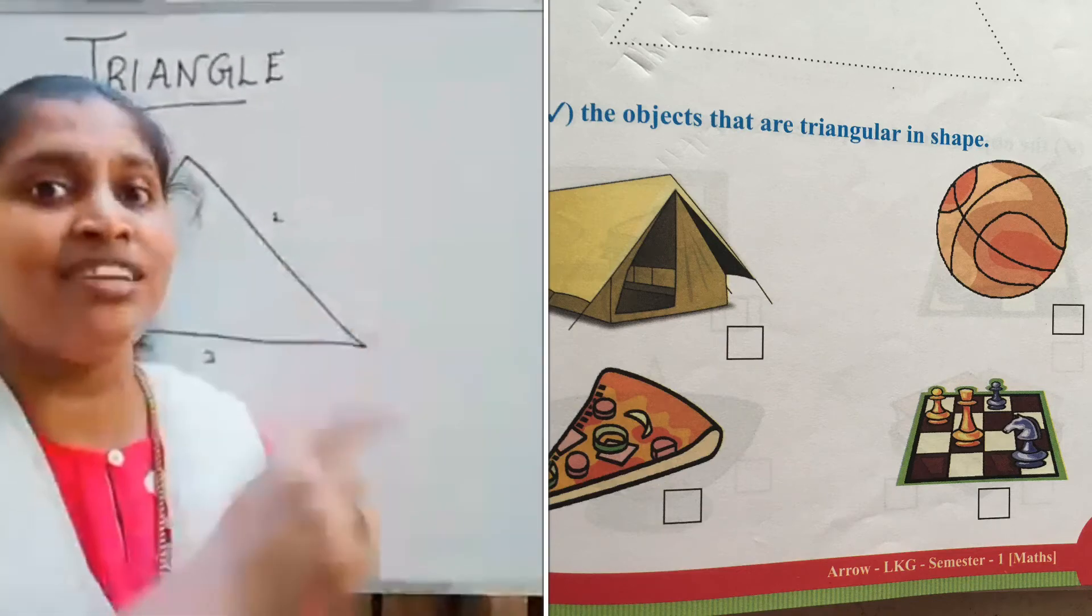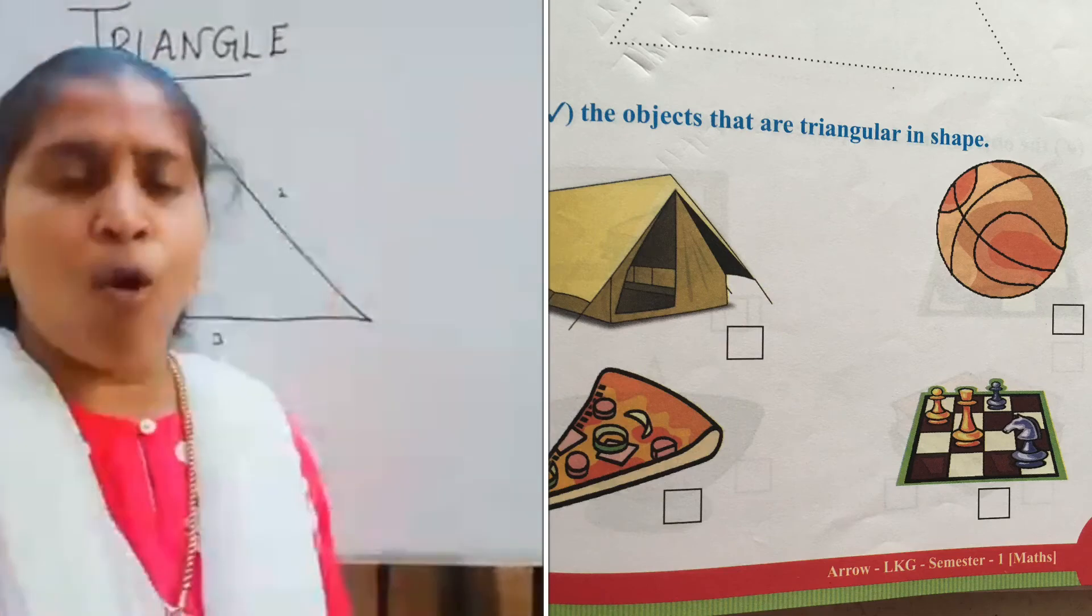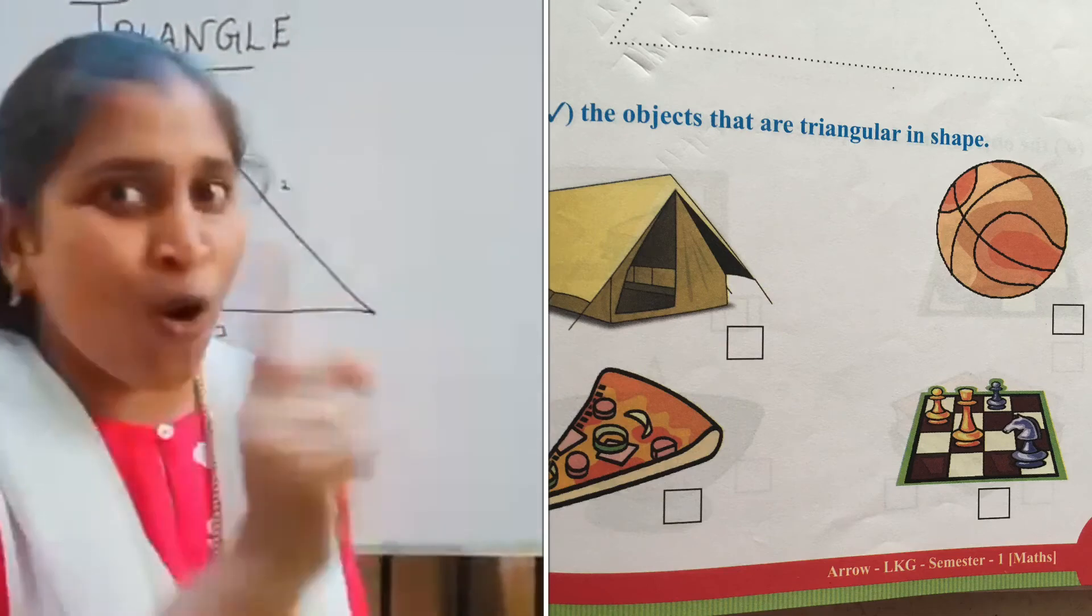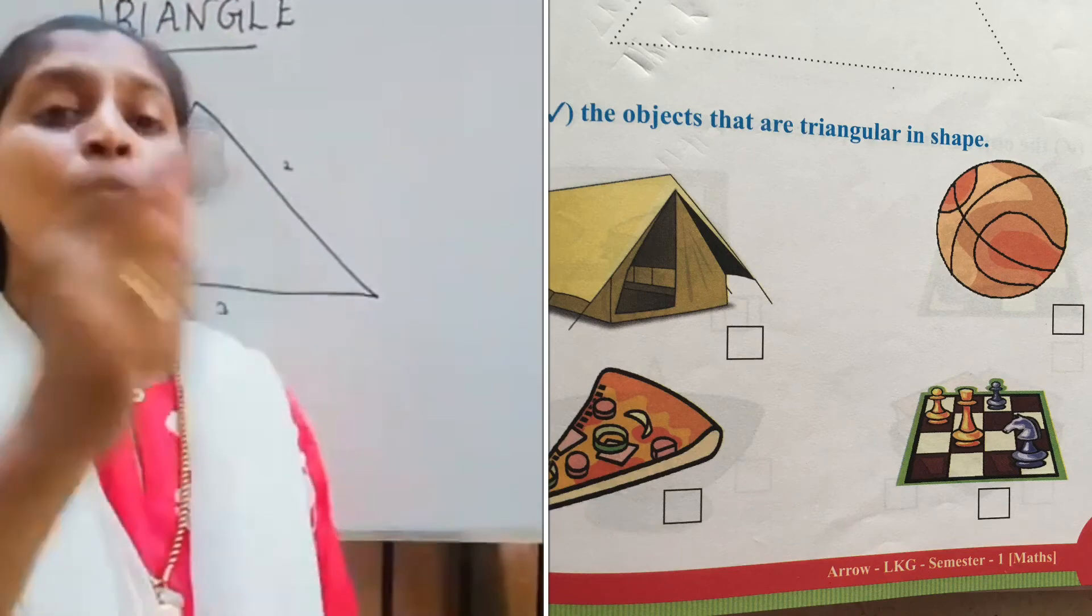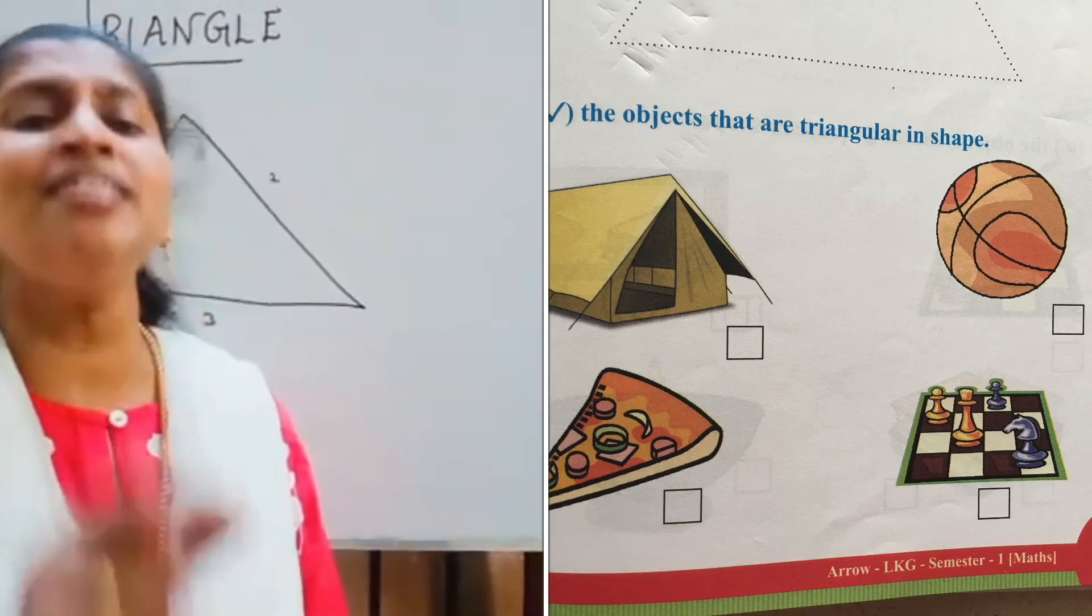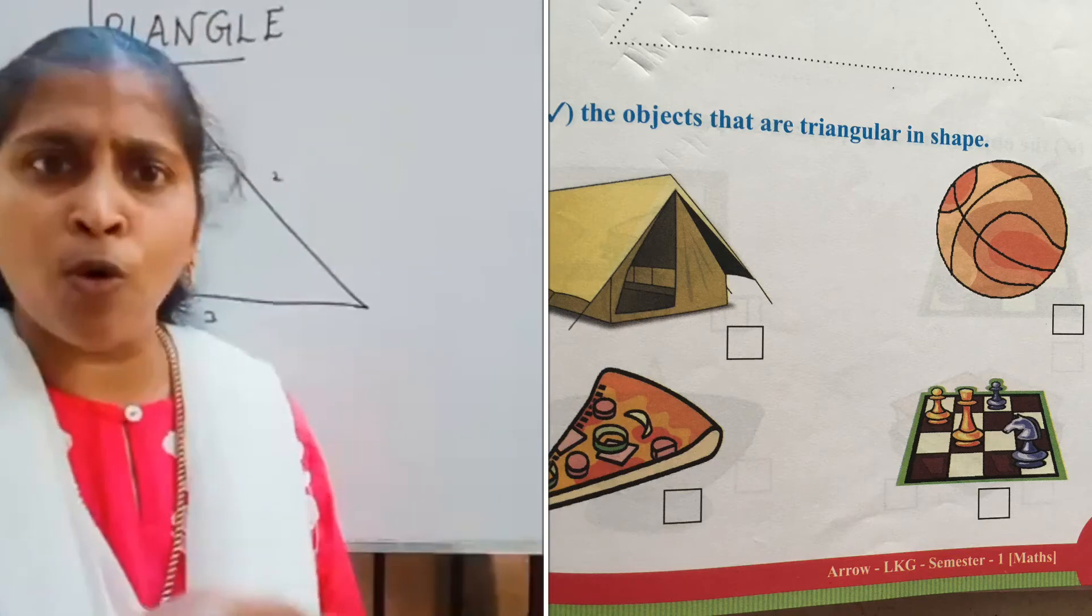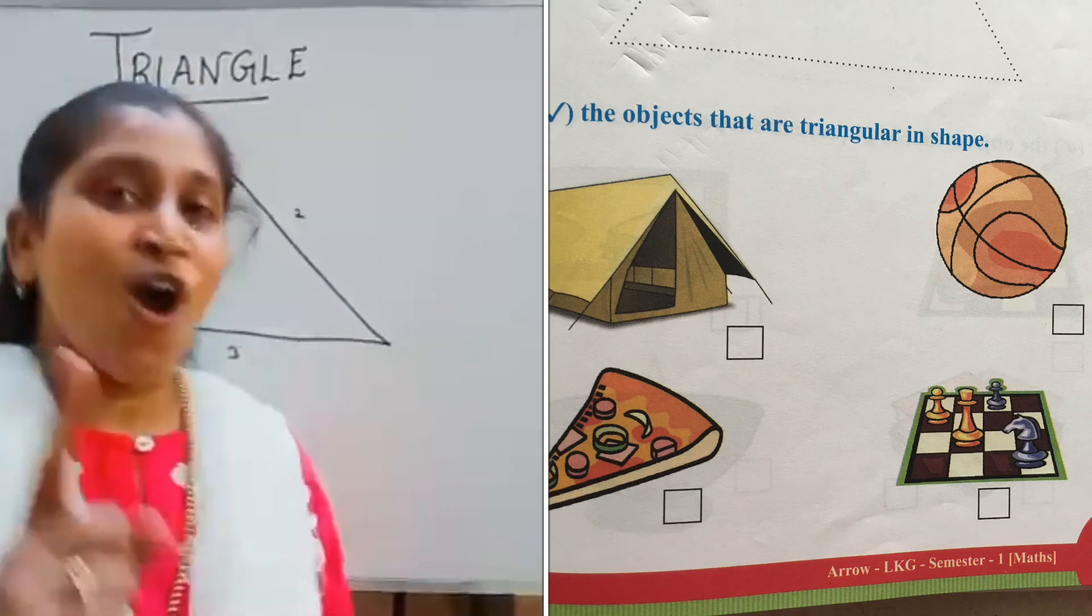Next one: tick the objects that are triangle in shape. When you see there, you will see a tent, right? That is triangle in shape, so tick it. Is the ball triangle in shape? No. The pizza when it is cut into pieces will be triangle in shape, so pick it. Is a chessboard triangle in shape? No, so don't tick that.